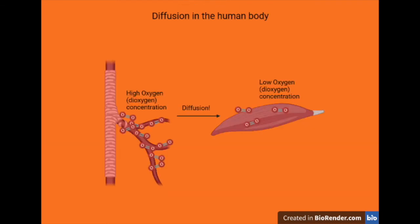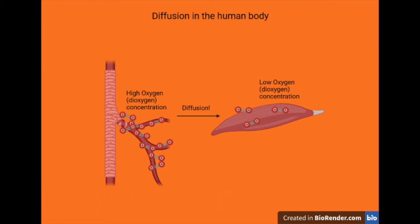So where can we find diffusion in our bodies? When we are breathing, inspiration allows new oxygen to enter our lungs and go into our blood. Our blood will then go to all of our organs to give them oxygen. In that case, the blood has a high concentration of oxygen while our muscles have a low concentration of oxygen, so oxygen will be diffusing from a high concentration in the blood to a low concentration in the muscles.